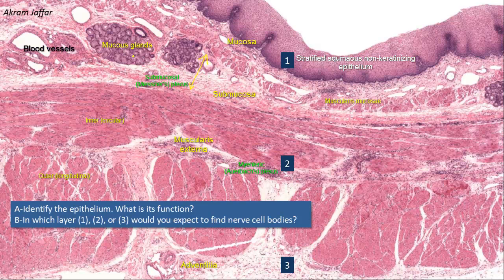It must be mentioned that both the submucosal and the myenteric plexus contain sympathetic and parasympathetic fibers, but the sympathetic fibers are already post-ganglionic, having relayed in cell bodies located in the prevertebral and paravertebral ganglia. The parasympathetic fibers synapse in small ganglia located in or close to the organ involved. Thus, the nerve cell bodies present in layer 2 or in the submucosa are parasympathetic.